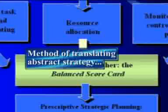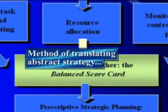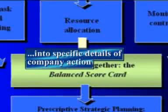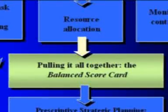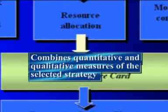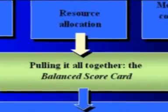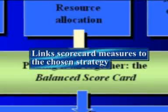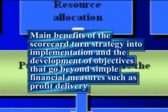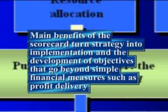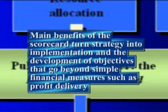Turning to the balanced scorecard, this was developed as a method of translating abstract strategy from a company or an organisation in the public sector into specific details of company action to help the strategy to work. The balanced scorecard combines quantitative and qualitative measures of the selected strategy. It acknowledges the different expectations of the various stakeholders and attempts to link scorecard performance measures to the chosen strategy. The main benefits lie in its focus on turning strategy into implementation and developing objectives that go beyond simple financial measures.